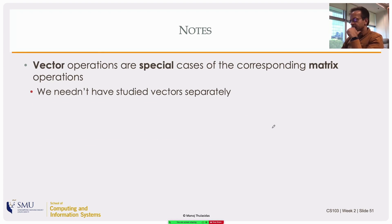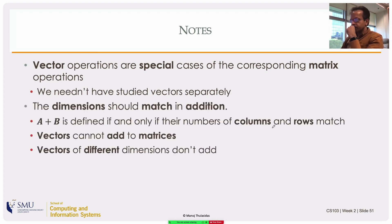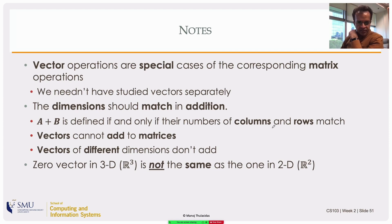Vectors are special cases of corresponding matrices, so vector operations are special cases of the corresponding matrix operations. Dimensions should match in addition. A plus B is defined if and only if the numbers of columns and rows match. In particular, vectors cannot add to matrices, and vectors of different dimensions cannot add.